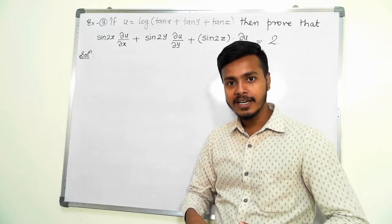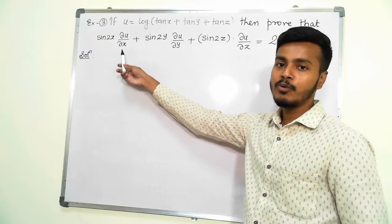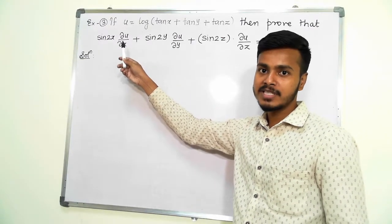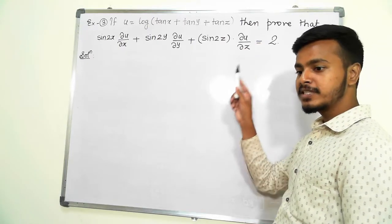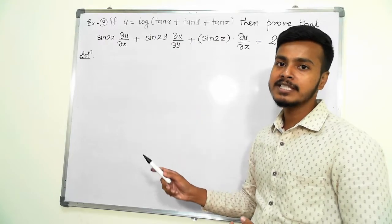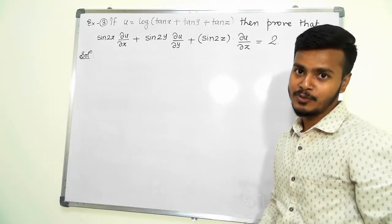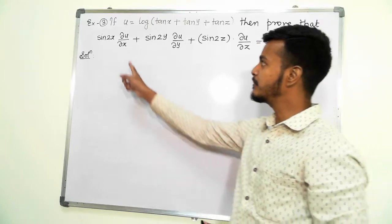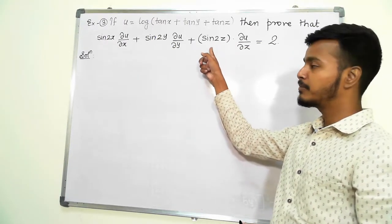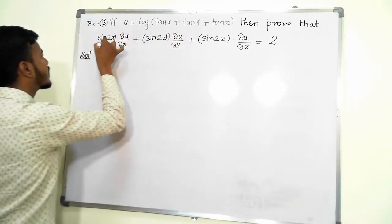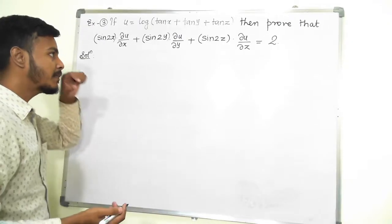Just like the previous problem, this result gives me an indication of what I have to do. I have to find del u by del x, del u by del y, and del u by del z. The second step is to multiply del u by del x by sin 2x, the second by sin 2y, and the third by sin 2z, then sum them all up.